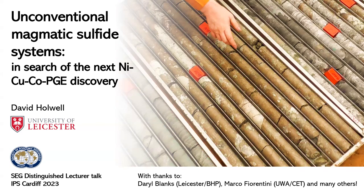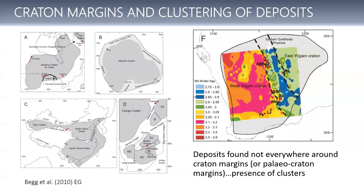Lots of people are thanked for that, particularly Daryl and Marco being part of this for a long time. So let's define what I mean by conventional first. This sort of spatial distribution and correlation between kraton margins and major nickel deposits we've known for quite some time. Even things like the Yilgarn, where we've got nickel deposits down the middle of a kraton — it's a paleo kraton boundary.